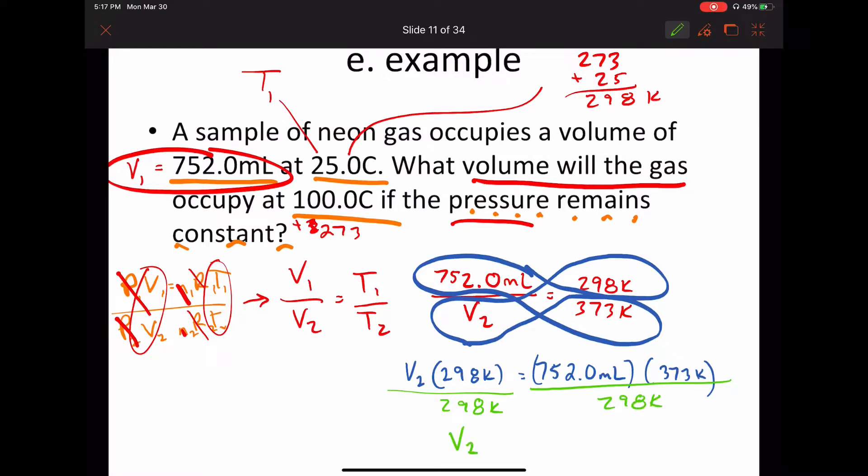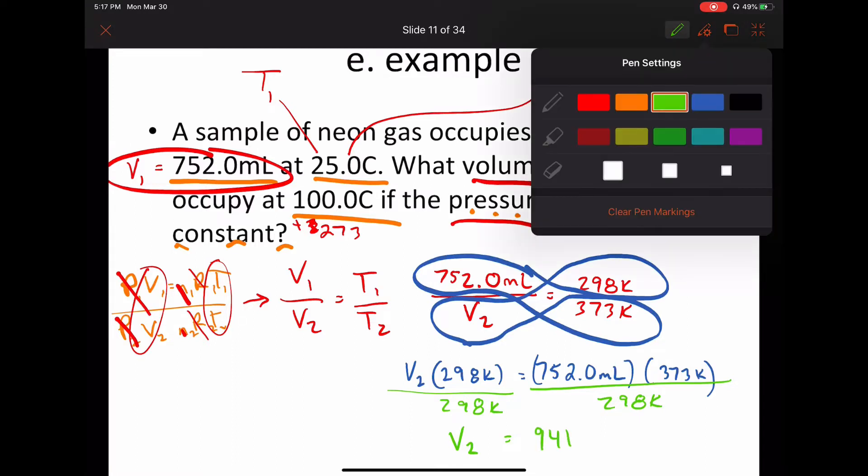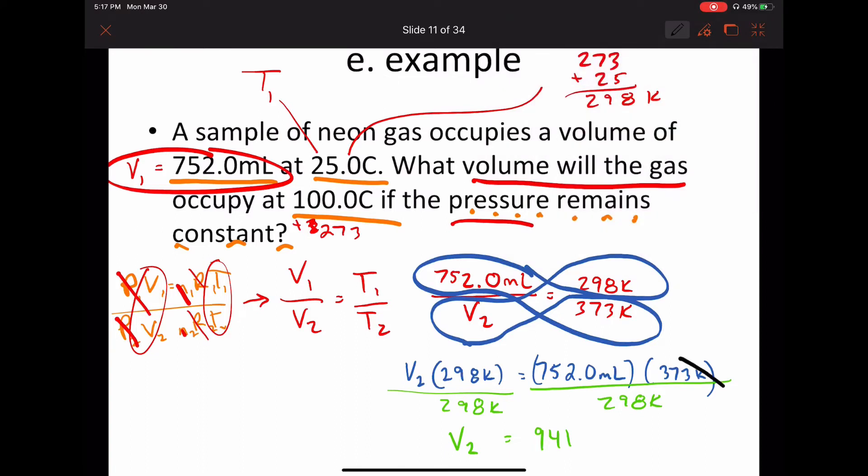That's going to give us V2 equals 941.0, it looks like. And then units, if we take a look, the Kelvins cancel out, Kelvins cancel out, milliliters.